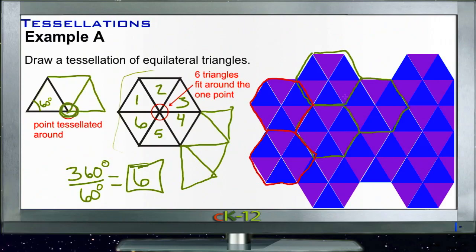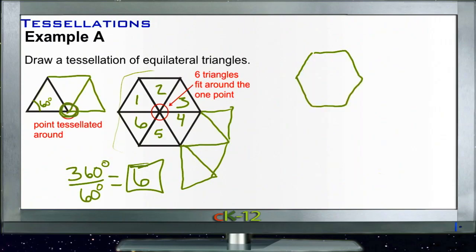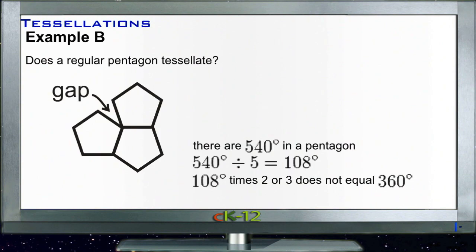Alright, so Example B says: Does a regular pentagon tessellate? Well, first let's do it mathematically. We know that what we need to do is get 360 degrees.